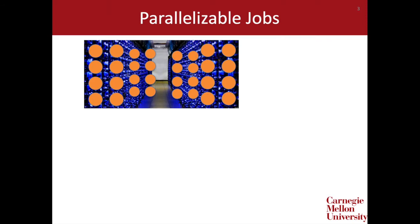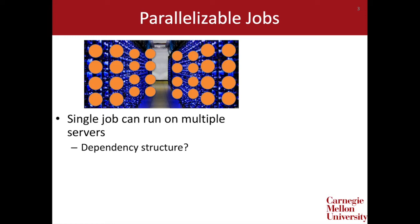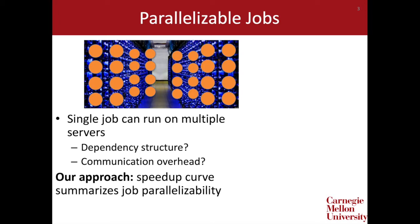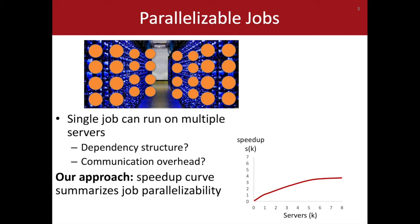To answer this question, we'll need a model of how parallelizable jobs run in our data center. A single job can run on multiple servers; however, jobs often have a dependency structure which limits their ability to scale, and a job might have some communication overhead between tasks. To summarize these concepts, we'll use a speedup curve which describes job parallelizability. On the x-axis we have the number of servers k, and on the y-axis the speedup function s. This red line describes the benefit a job gets from running on additional servers — for example, this job runs four times as fast on eight servers as on a single server.